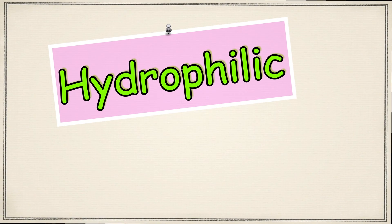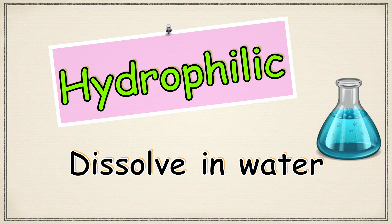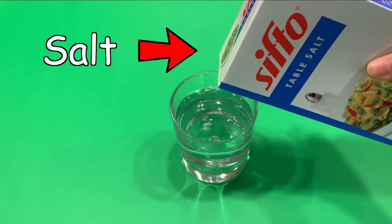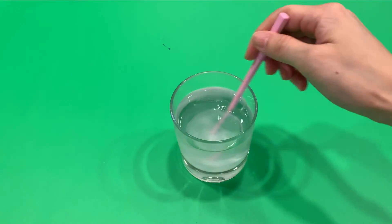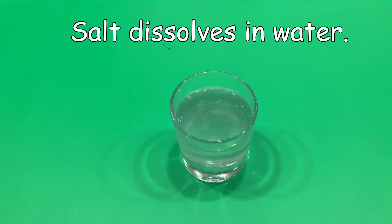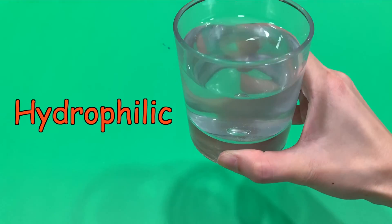Now back to chemistry. Hydrophilic in chemistry means substances that can be dissolved in water. Hydrophilic molecules are also known as polar molecules. For example, if you add salt to water, it dissolves — therefore salt is hydrophilic.